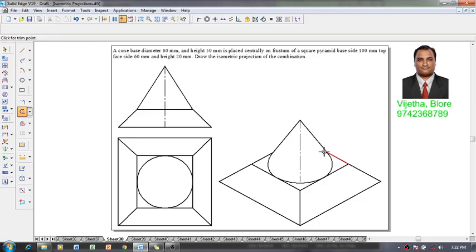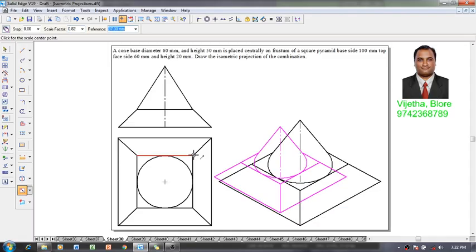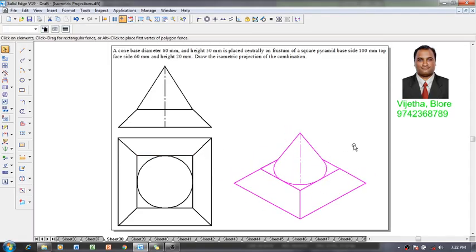Wherever the invisible edges are there, here we have one edge. One can see where the isometric drawing or isometric view has been completed. Selecting the isometric view, we will get back to the isometric projection using the isometric scale factor. One can see that the isometric projections of the given combination is completed in all aspects as per the given conditions.